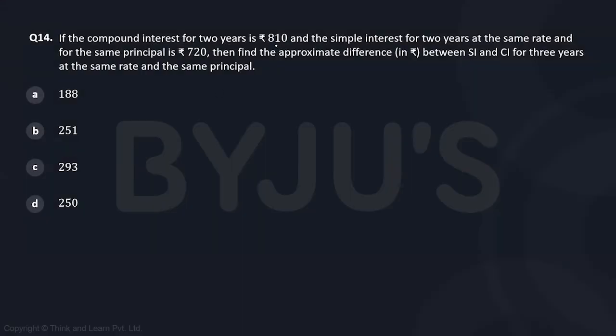If the compound interest for two years is 810 and the simple interest for two years at the same rate and same principal is 720, then find the approximate difference between SI and CI for three years at the same rate and same principal. So we are going to use the table.